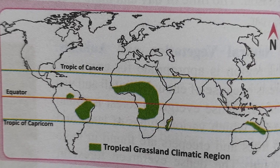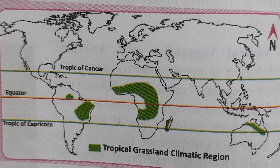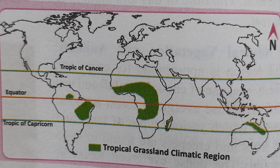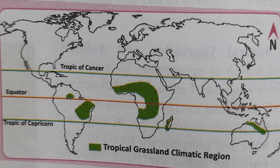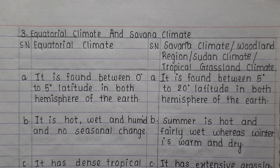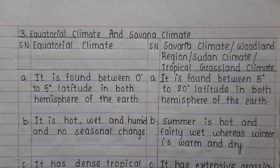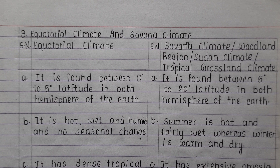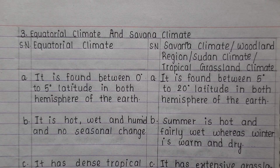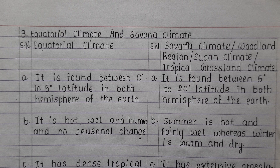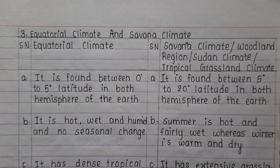The green-colored region on the map shows the tropical grassland climate. From the point of examination, as I have already said, it is for four marks. So let's look at what we need to write for each point.